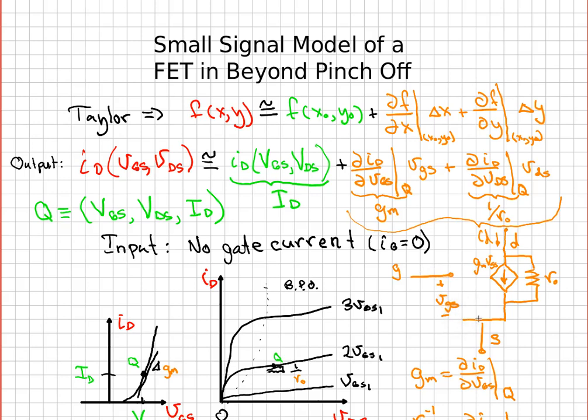But there is a gate connection. The gate to source voltage is the voltage at the gate minus the voltage at the source, as you can see here. And over here, the drain current is these two terms.